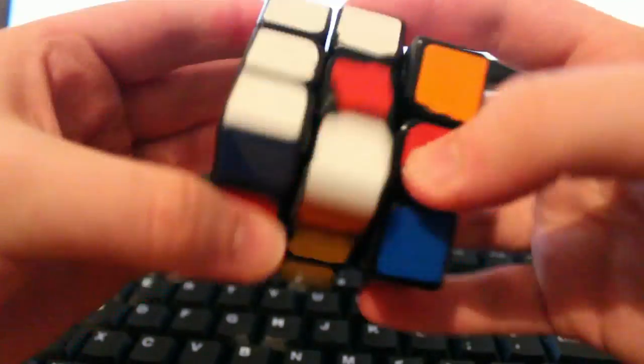Step 3. Place the D corner while orienting the U corners. Step 4. Place the D edges while orienting the U edges.